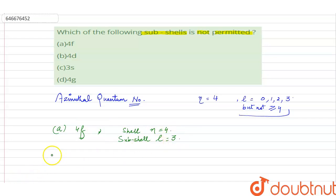B: 4d. So n here is 4, and as d is present, l is 2. C: 3s. Here value of n equals 3, l equals 0 because s is present.